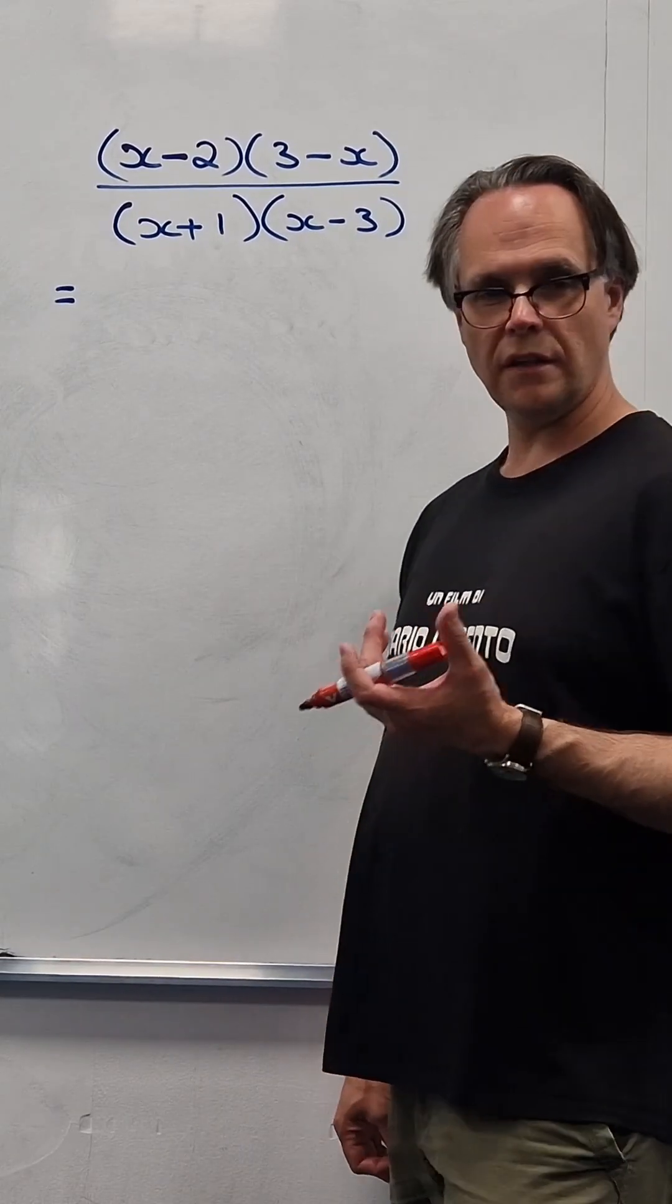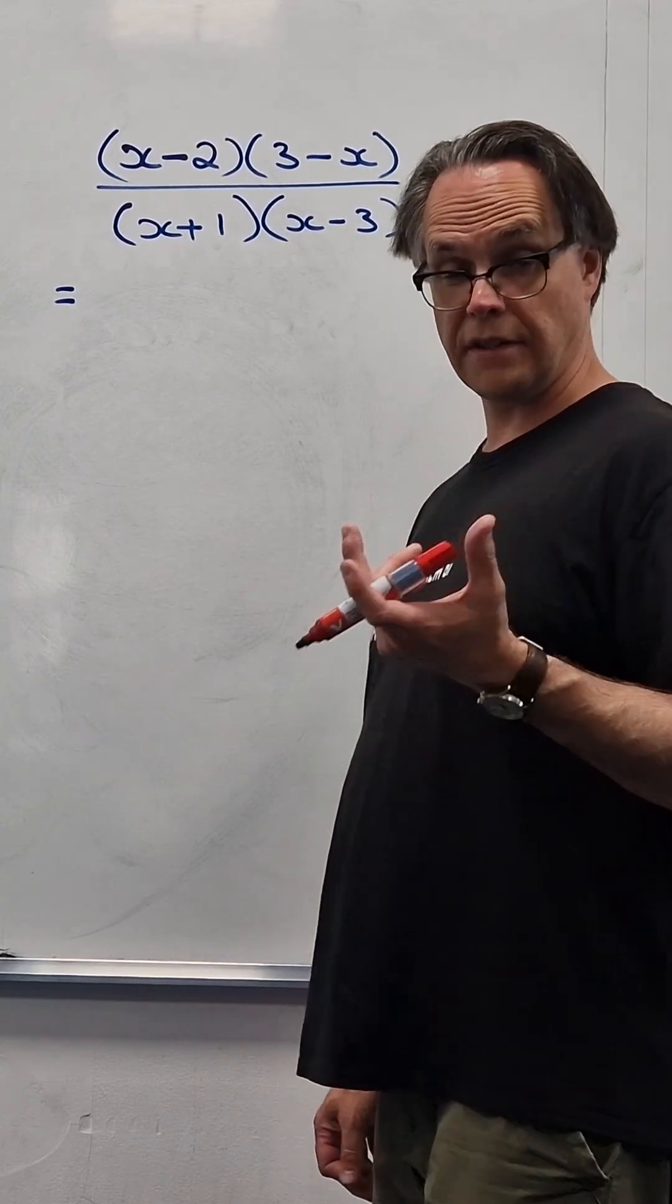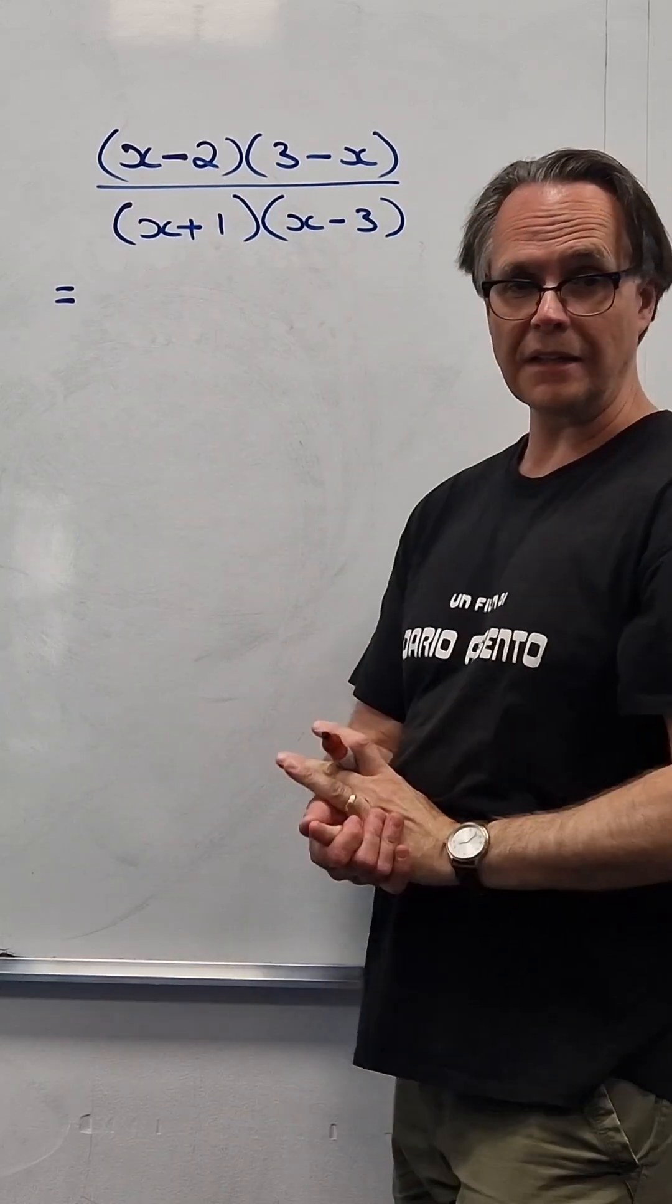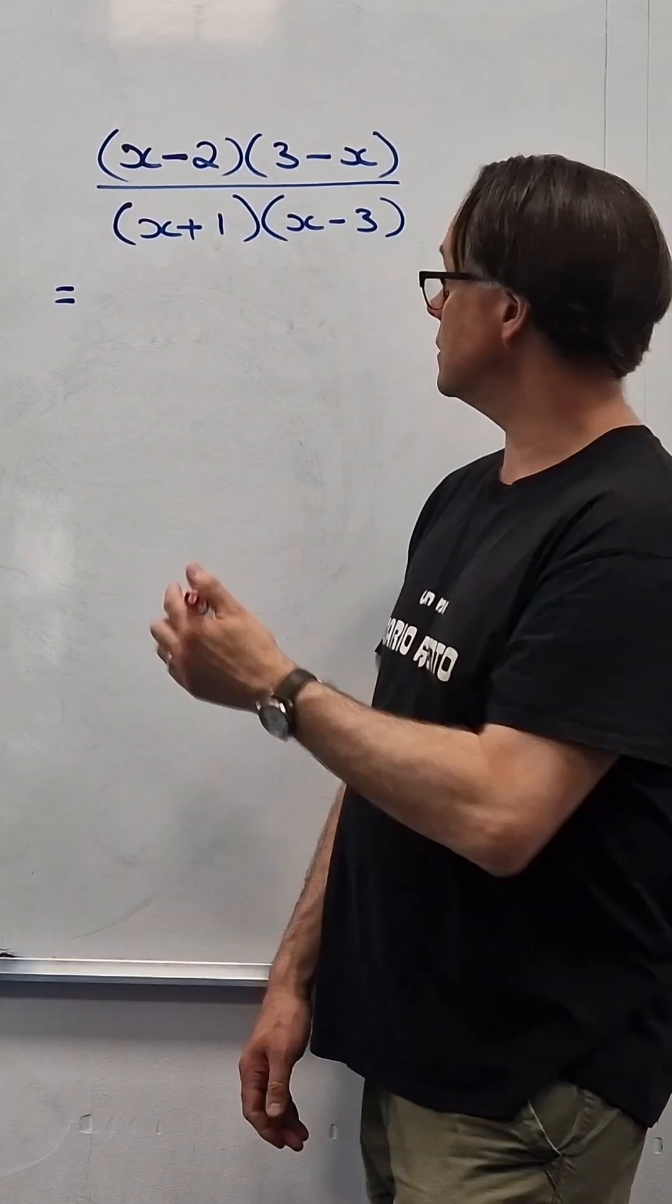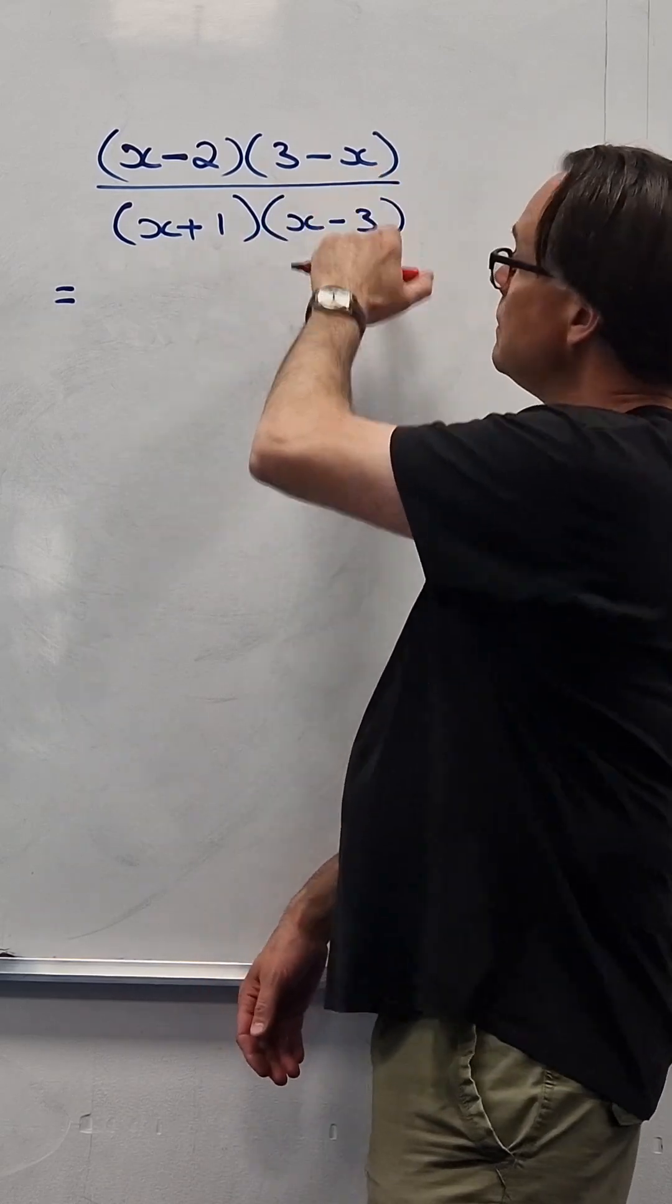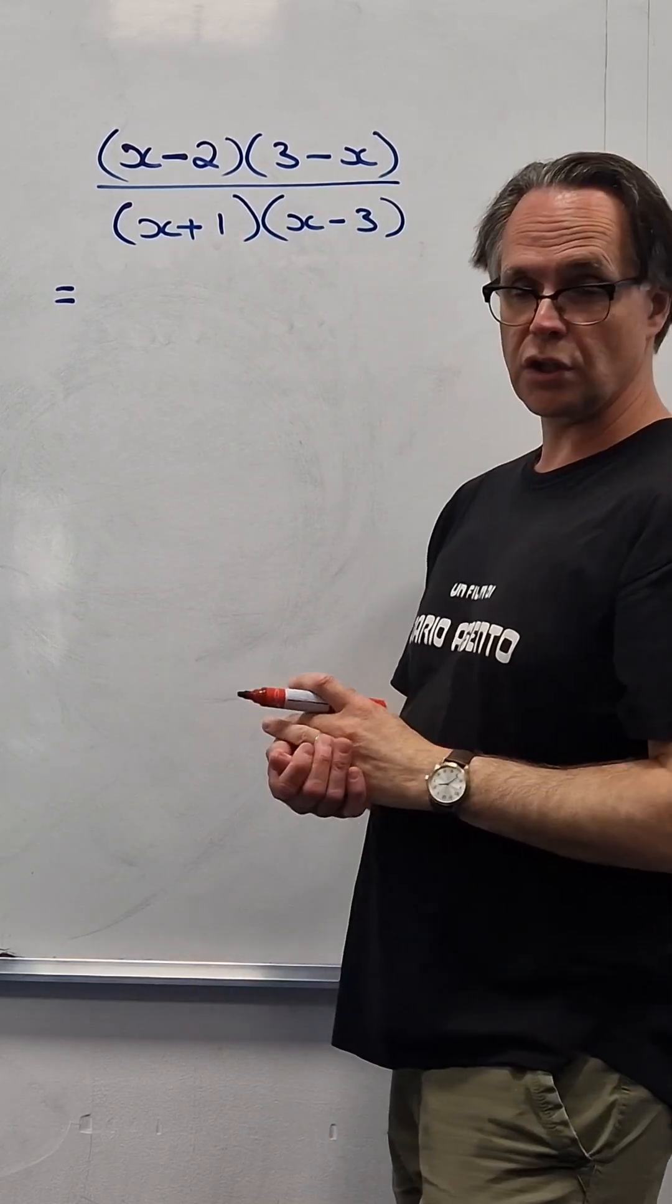Right, let's say you had a fraction that had a quadratic on the top and a quadratic on the bottom and you factorised them and you ended up with this and you want to do some cancelling but you're a bit frustrated because you've got x minus 3 on the bottom and you've got 3 minus x on the top.